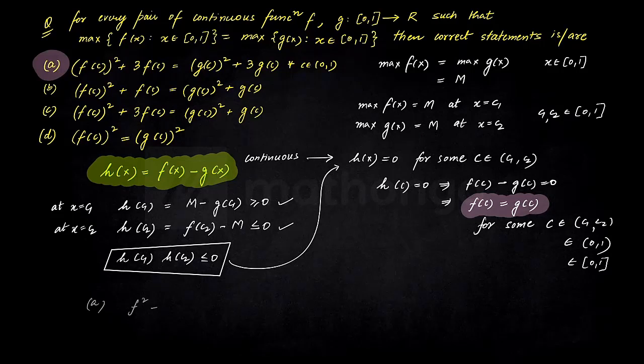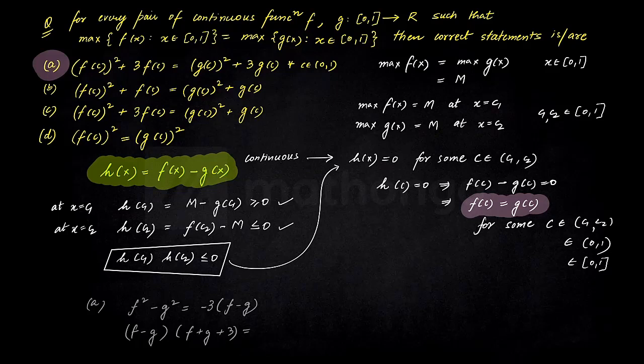If you notice option A ko explore karte hain toh bachcho kya ban raha hai? f square minus g square is equal to minus times I can say 3 comma le lete hain. Toh kitna ban raha hai? f minus g and if you see I can say f minus g into f plus g plus 3 is equal to 0. Then one of the solutions here could be f equal to g which makes sense. So that is why option A comes out to be correct.